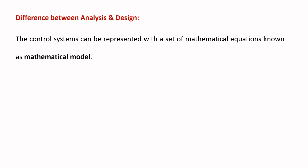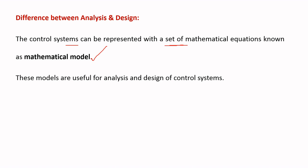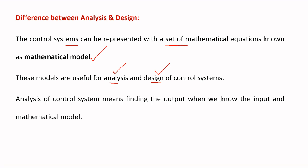Coming to the difference between analysis and design of a system: generally, control systems can be represented with a set of mathematical equations. These sets of mathematical equations are known as the mathematical model. By using mathematical models we can analyze and design control systems. There is a small difference between analysis and design of a control system.